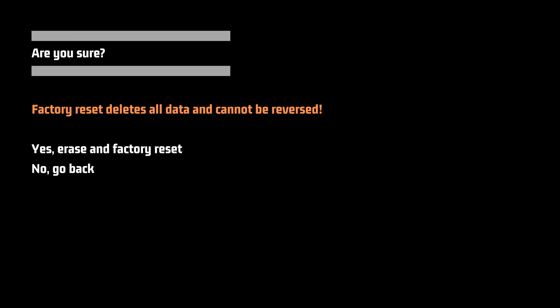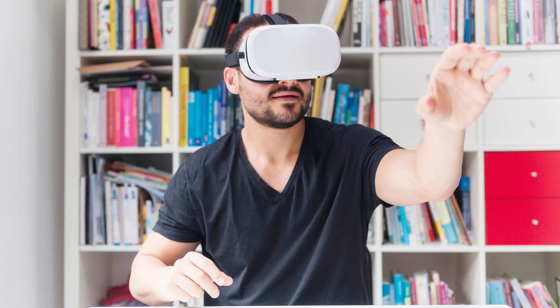The next screen asks if you're sure you want to factory reset your Oculus Quest 2, and warns you that a factory reset will delete all of the data on your device and cannot be reversed. Step 4: Use the volume buttons to highlight yes, erase, and factory reset, and then press the power button. Your Oculus Quest 2 will automatically be wiped and restored to its default factory settings.